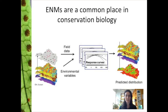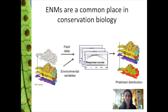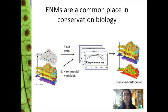This is probably one of the most used figures in ecological niche model presentations and courses. Ecological niche models are now a common place in conservation biology and several other fields, where you have field data — occurrences — and several environmental layers. From that, you use some algorithm to model the response curves and project the response of the species in relation to the environment to a surface or area where the species occur.